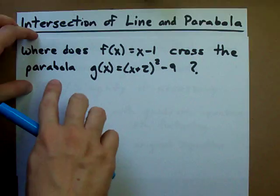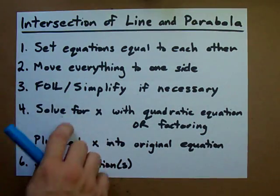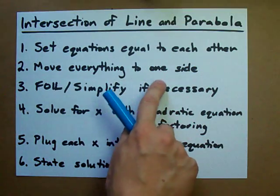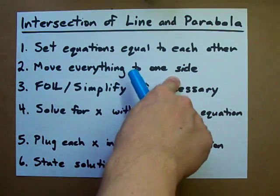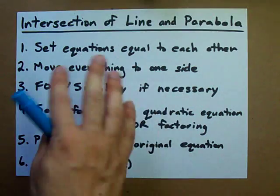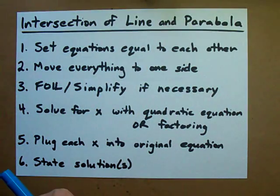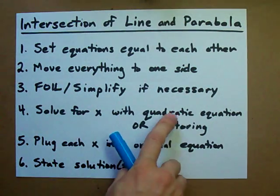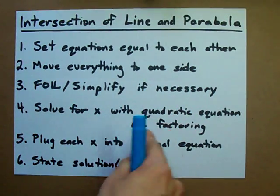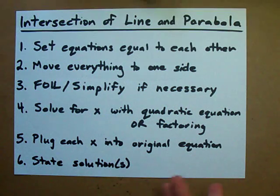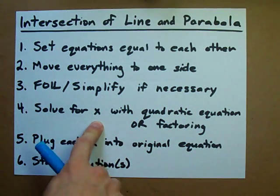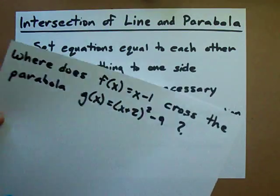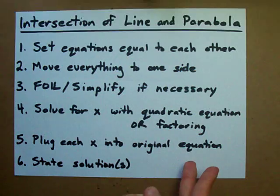The way you're going to answer questions like this is to set the equations equal to each other and then move everything to one side. You may have to FOIL it or simplify it, collect like terms, but what you're going to do is solve for x with either the quadratic equation or factoring, whichever you choose. Once you have those values for x, you're going to plug them into either of the original equations and then state your solutions.